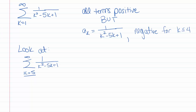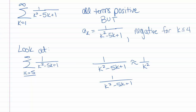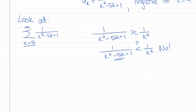This seems like it will behave like 1 over k squared when k is big. But is 1 over k squared minus 5k plus 1 going to be less than 1 over k squared? We're subtracting from the bottom, which makes the bottom smaller, so no — not necessarily. What if instead we compare 1 over k squared minus 5k plus 1 with 2 over k squared?